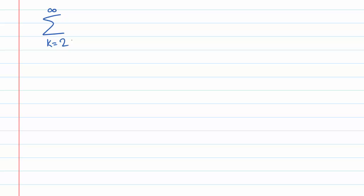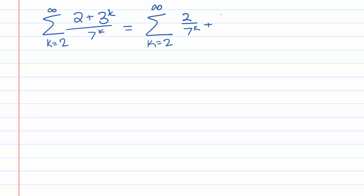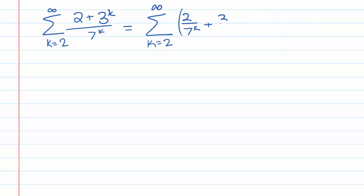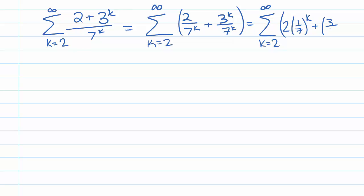Let's try another example. We have the sum k equals 2 to infinity of 2 plus 3 to the k, over 7 to the k. This sum can be rewritten as the sum k equals 2 to infinity of 2 over 7 to the k plus 3 to the k over 7 to the k, which we can rewrite as 2 times (1/7) to the k plus (3/7) to the k.